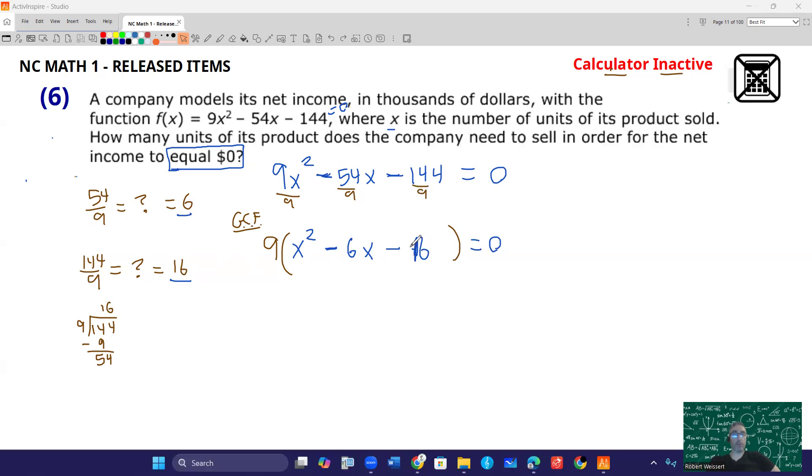Now, why did I go through all that trouble? Well, because when you have a coefficient outside that doesn't have an x in it, you can get rid of it. So if I'm trying to solve this for 0, I can simply divide both sides by 9. But my focus right now is on this trinomial and the fact that it's factorable.